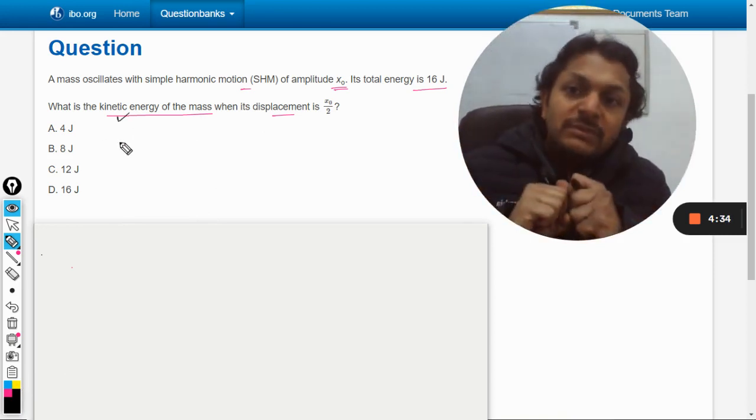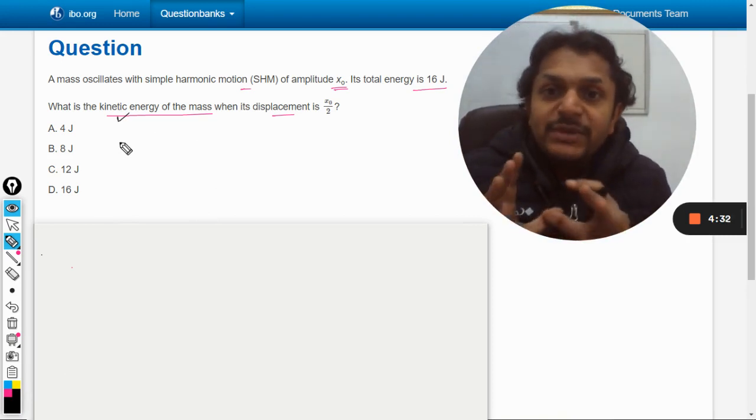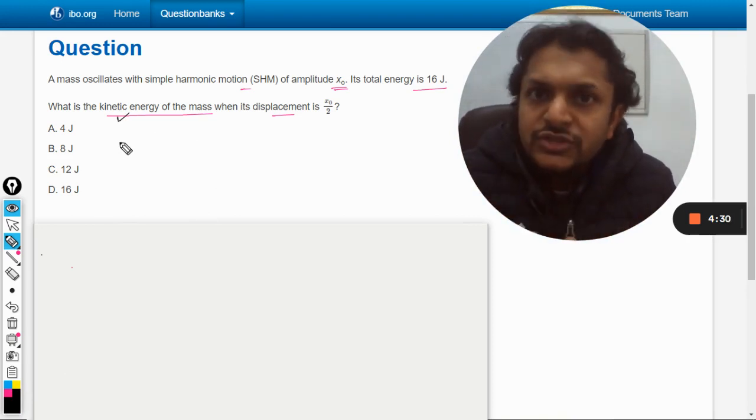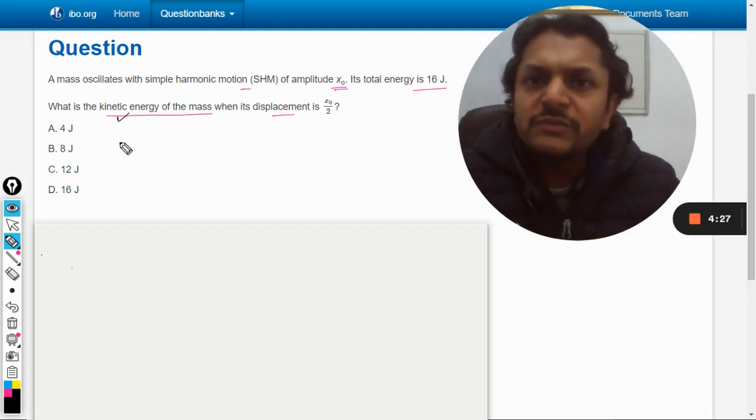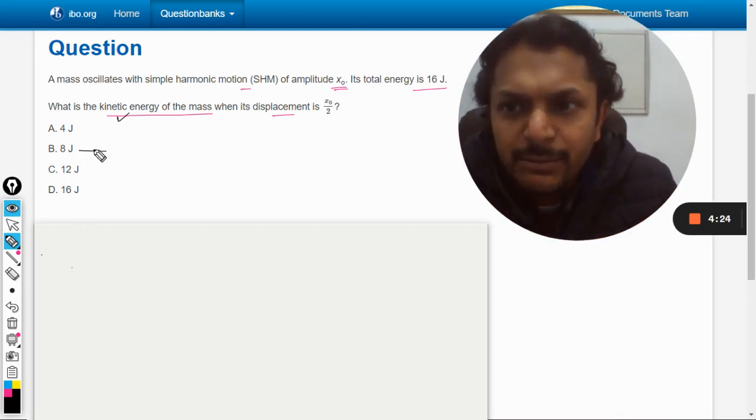As per the mistakes that are concerned, what is the biggest mistake people do here? Students think that okay, displacement is half, so it means that energy will be half, so definitely the answer should be B, that is 8 joules.